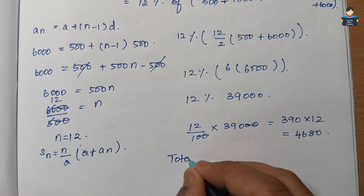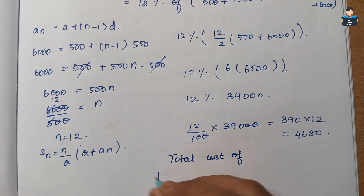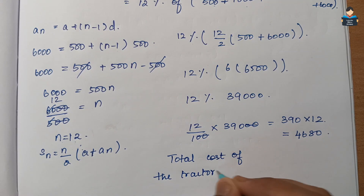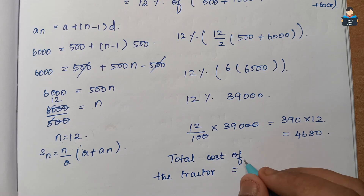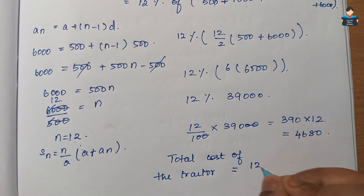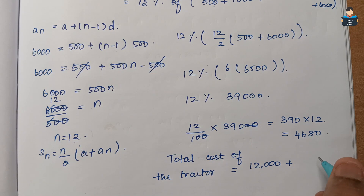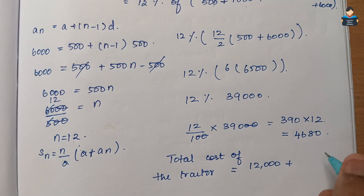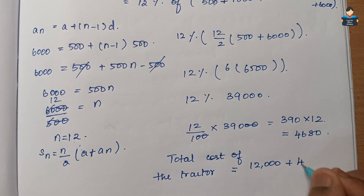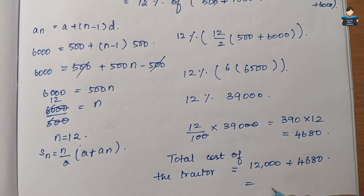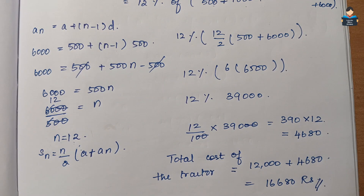Total cost of the tractor = original price + total interest = 12,000 + 4,680 = rupees 16,680. So the tractor will cost him rupees 16,680 in total.